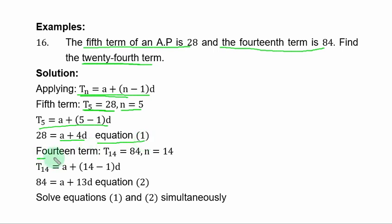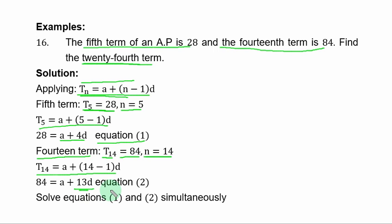Also, the 14th term T sub 14 equals 84. With N equals 14, substituting into the Nth term formula gives A plus 13D equals 84. Call this equation 2. We now have a pair of equations with two unknown variables A and D, which must be solved simultaneously.